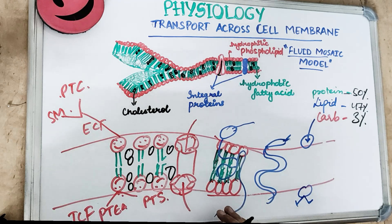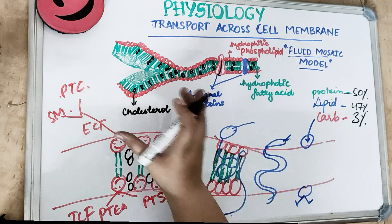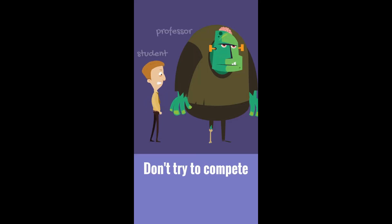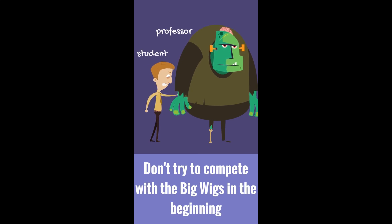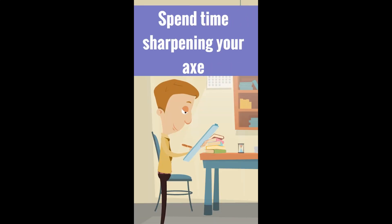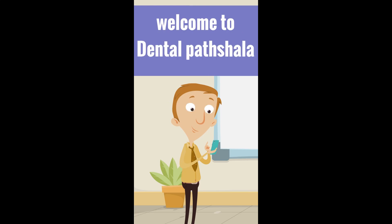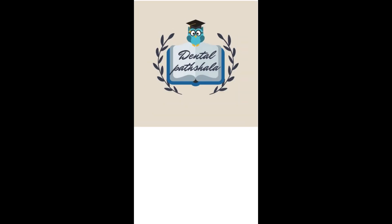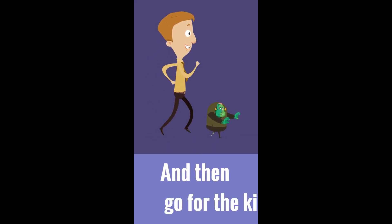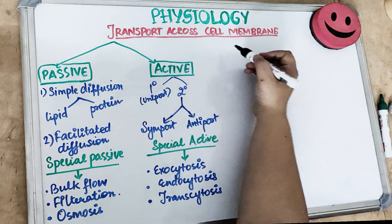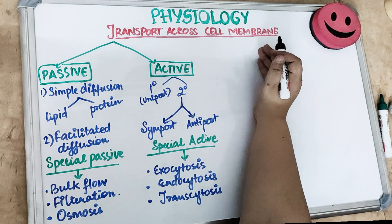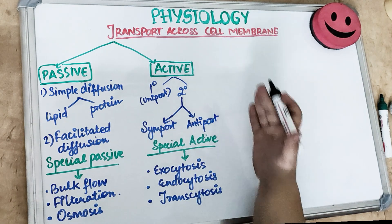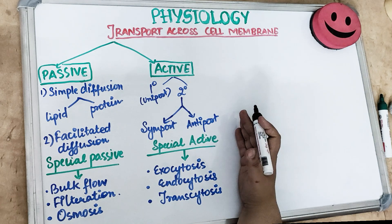Now we will study how transportation occurs through the cell membrane. We'll cover this in two parts: today's video covers passive transport, and the next video will cover active transport and special types of active transport.